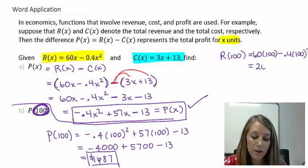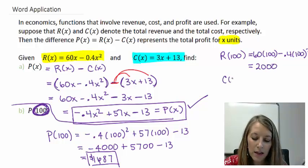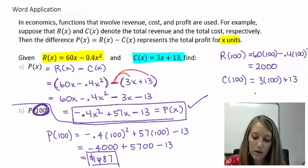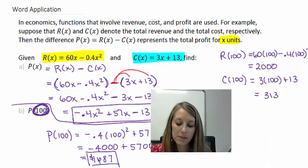And that simplifies to be 2,000, skipping all the work. And also, finding out my cost of 100 units by substituting 100 into my cost function. And that would have given me 313, skipping all my steps there.